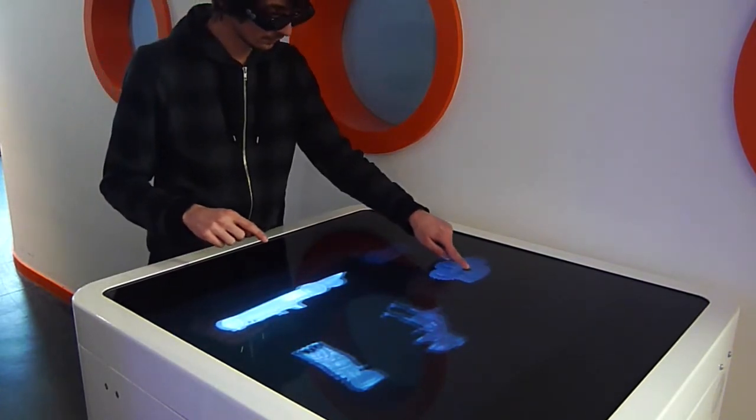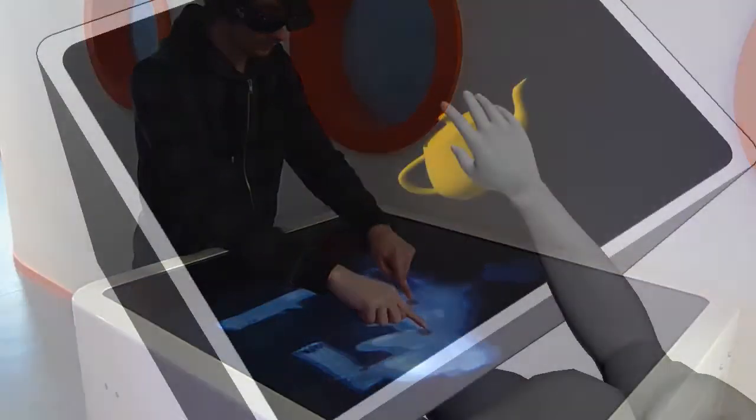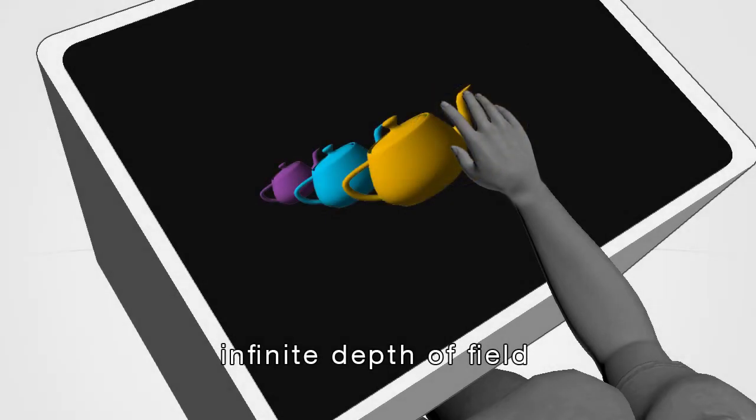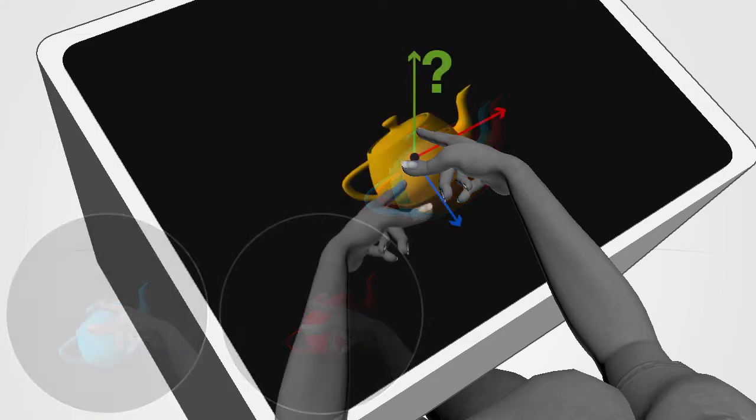Some issues are related to visualizing both the 3D content and the hands: content occlusion, depth collision, convergence without accommodation. Selection may be ambiguous and 3D interaction tasks may be hard to complete.